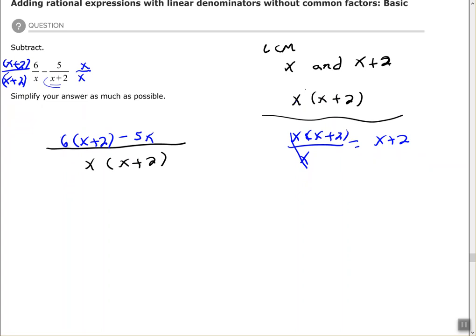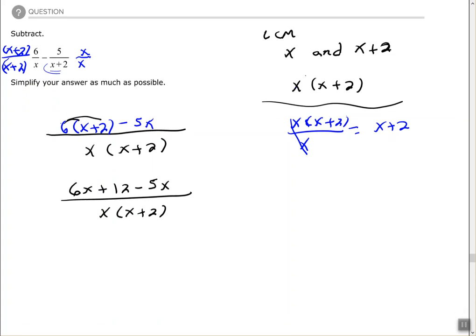You want to clear the parentheses by using your distributive property. Combine like terms, so we have 6x minus 5x is 1x, so x plus 12. This binomial of x plus 12 will not simplify with the binomial in my denominator. Remember we cannot pick apart binomials to simplify with a monomial, so in other words, this is my final answer.